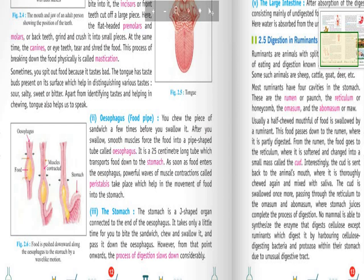Food pipe is better known as esophagus. So let's read: you chew the piece of sandwich a few times before you swallow it. After you swallow, smooth muscle forces the food into a pipe-shaped tube called esophagus. It is a 25 cm long tube which transports food down to the stomach.